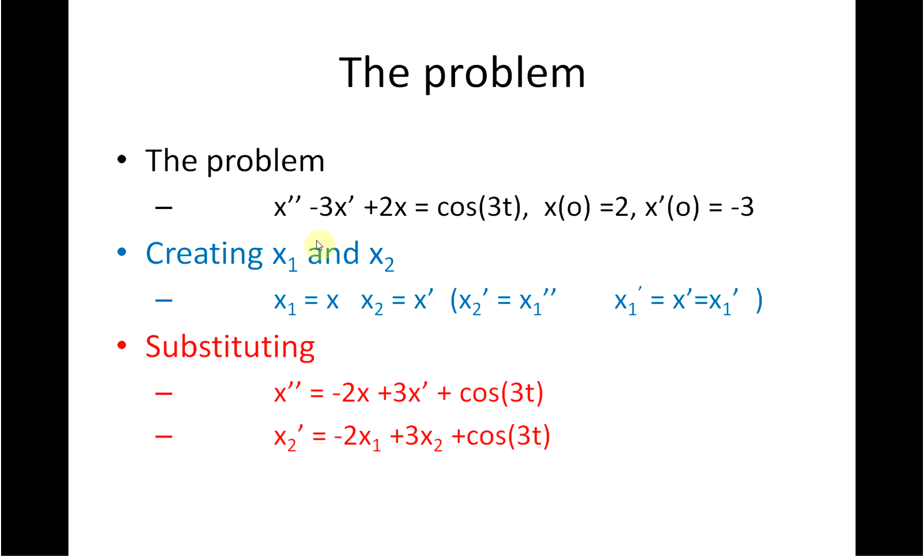So if I slow down here, what I did here was I left the d2x dt squared on the left-hand side and brought everything over to the right-hand side. So bring that across. We get the plus 2x over here becomes minus 2x here. And minus 3dt dx becomes plus 3dt dx and the cos 3t there.